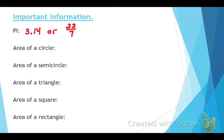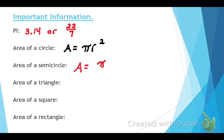Now we have some formulas you're going to want to have memorized. The area of a circle — does anyone remember that? Pi times r squared. You are correct. Pi r squared. And if you know that formula, you should be able to find the area of a semicircle formula pretty easily. A equals pi r squared divided by 2 — all she did was cut it in half.